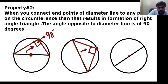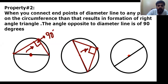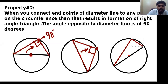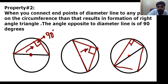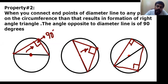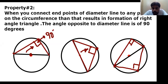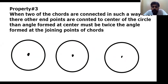The right angle is always opposite to the diameter line. For example, if you consider a point here and connect it to the endpoints of the diameter, this angle must be 90 degrees. No matter which point on the circumference you choose and connect to the endpoints of the diameter, it always results in the formation of a right angle triangle with the right angle opposite the diameter.